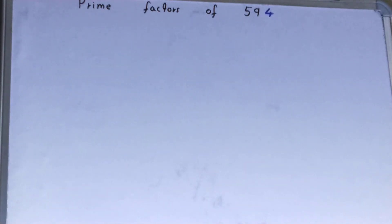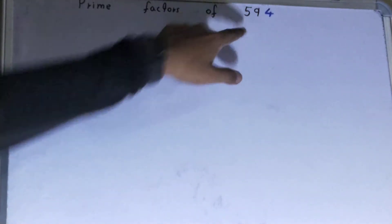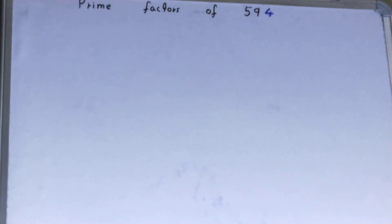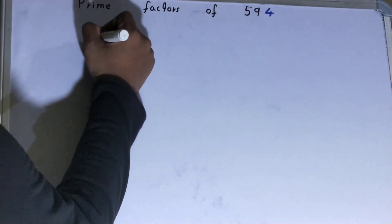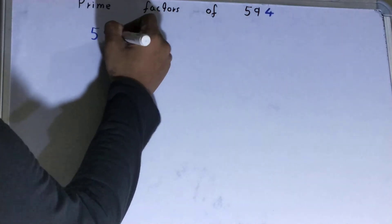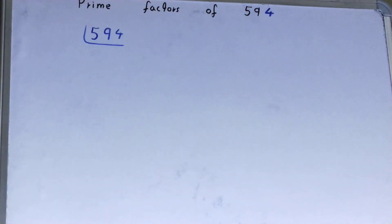Hello friends, in this video I'll be finding the prime factors of the number 594. So let's start. To find the prime factors of 594, you need to write the number like this.